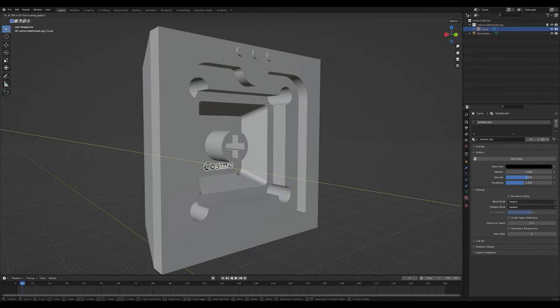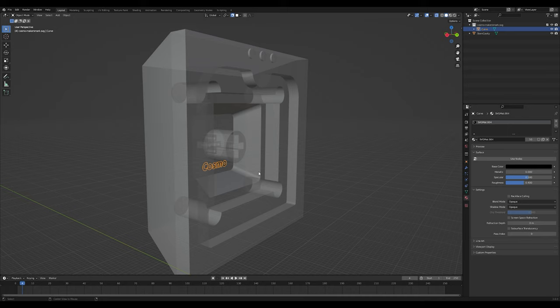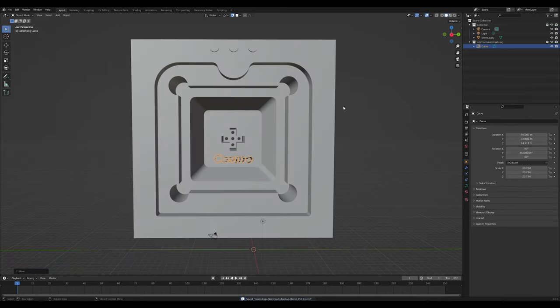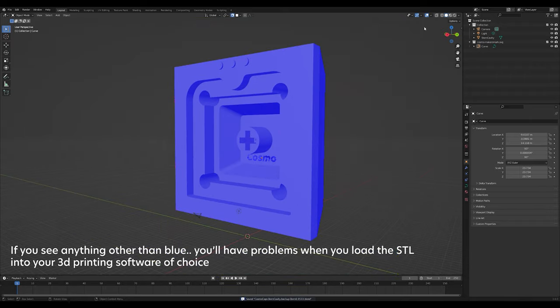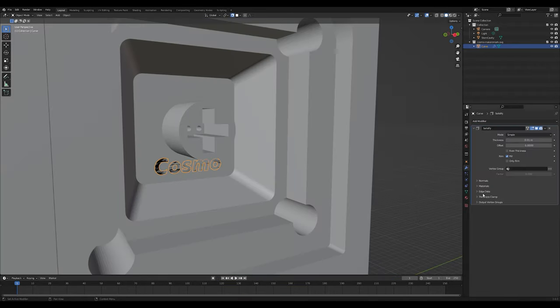Lastly, I'm adding the solidify modifier in order to extrude out the maker's mark.